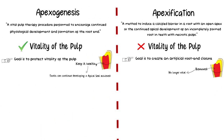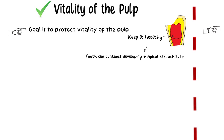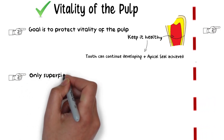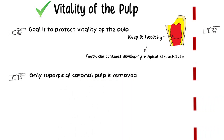In Apexogenesis, not the entire pulp is removed — rather, only the coronal pulp is removed. This removal of only the coronal pulp is known as pulpotomy. And depending upon how much of the coronal pulp is removed, there may be two types of pulpotomy.